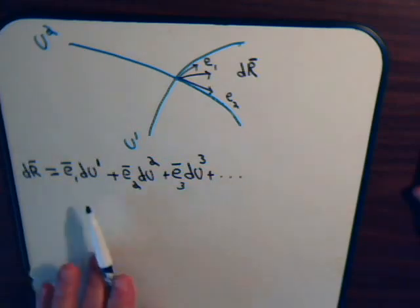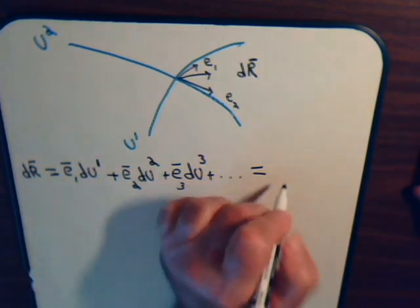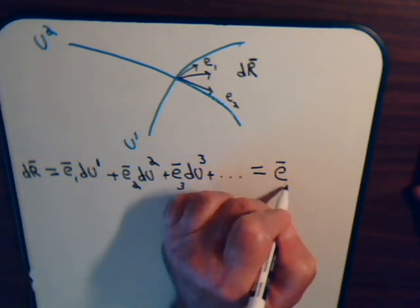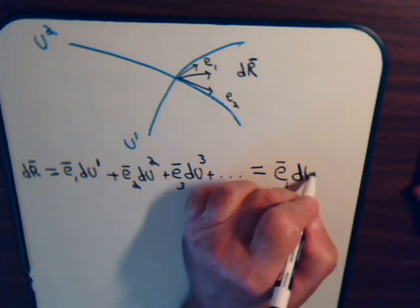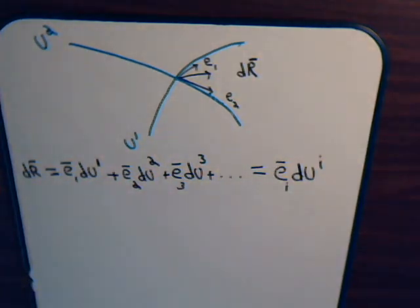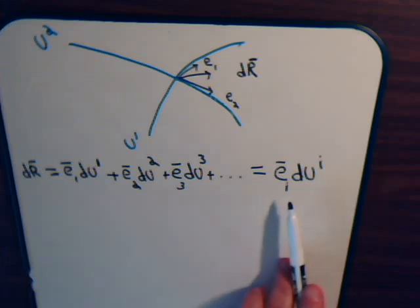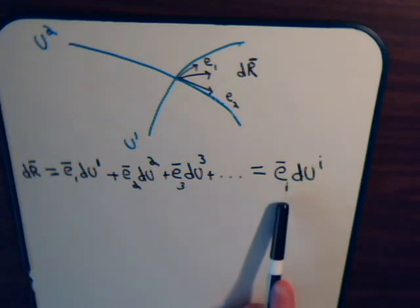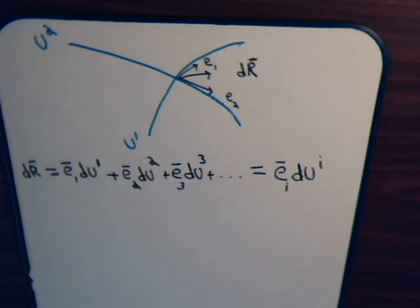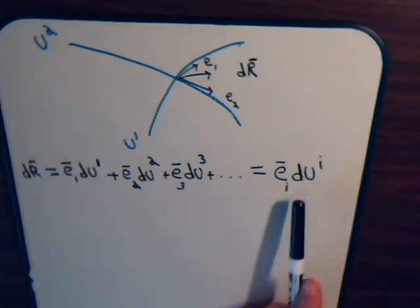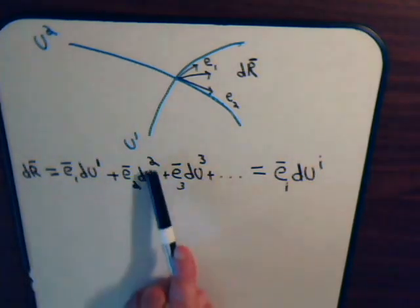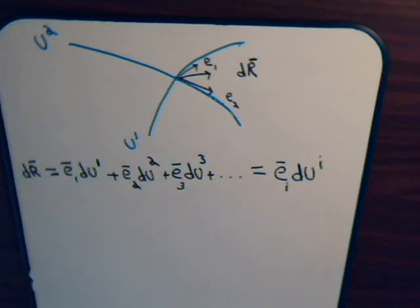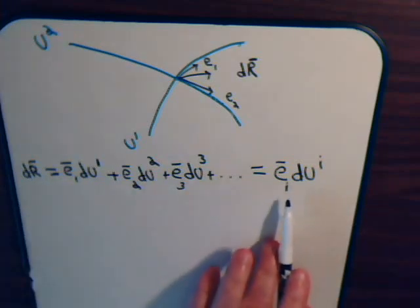There's an abbreviated way to write this expression. We have the repeated index i — whenever an index is repeated appearing downstairs and then again upstairs, that automatically assumes we are summing over it. So i equals 1, then i equals 2, then i equals 3, and so forth. Therefore dr equals this expression using the Einstein summation convention.